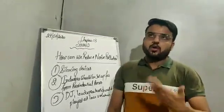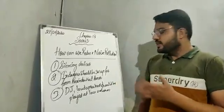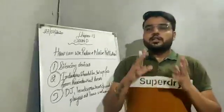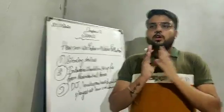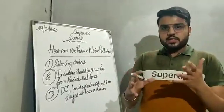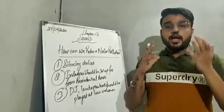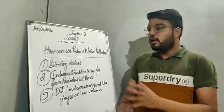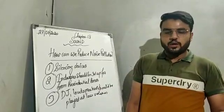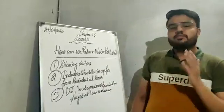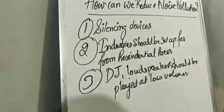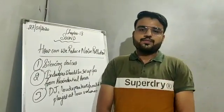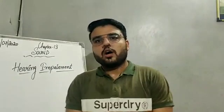In residential areas, DJs and loudspeakers should be played at low volumes and only when necessary — only on occasions. Secondly, trees should be planted near residential areas so that noise does not reach them. Because if there are obstacles in between, sound, being a form of energy, does not reach the residential area if there are many trees around it. These are some very effective ways of reducing and limiting noise pollution.